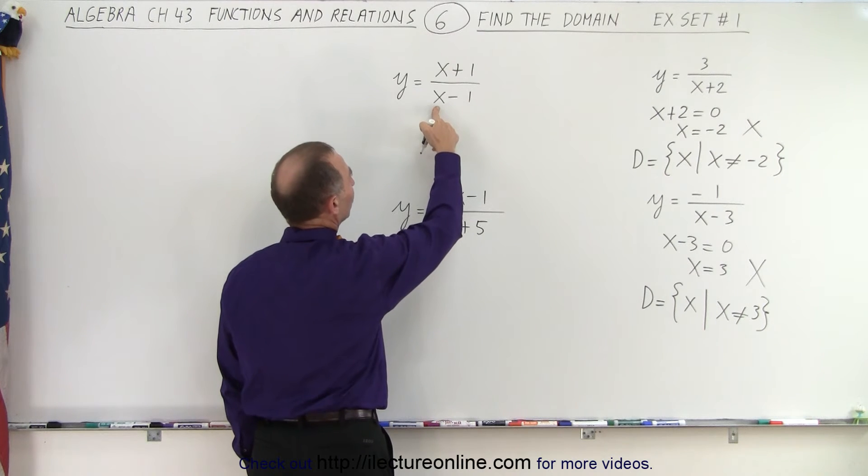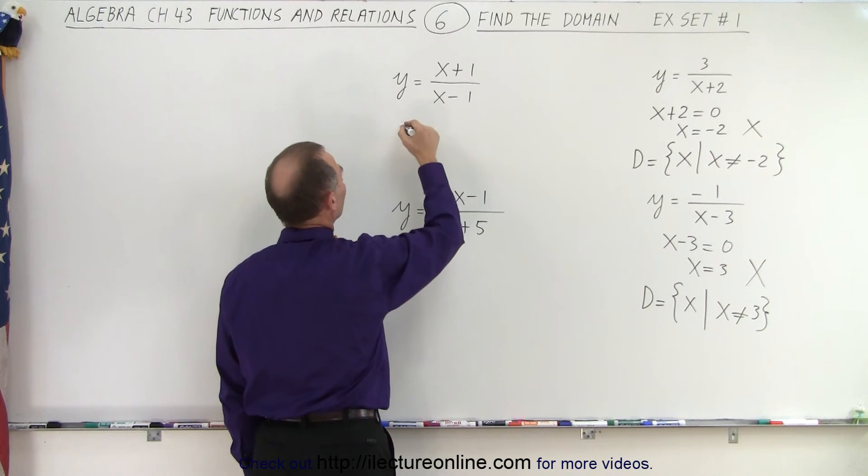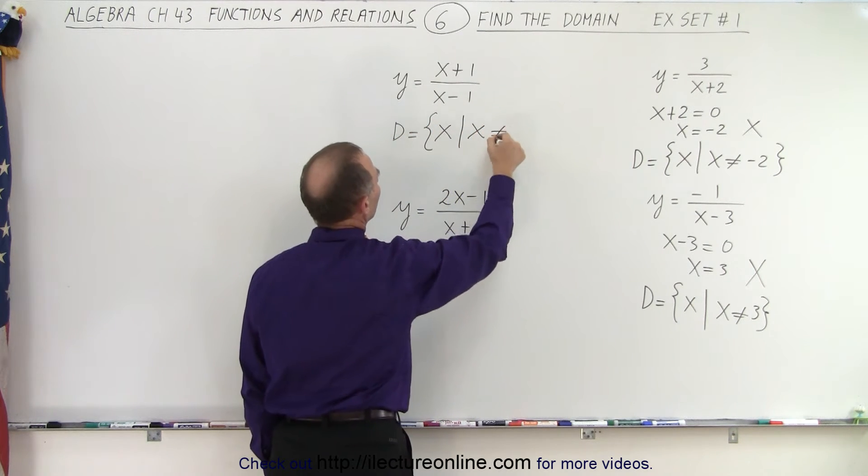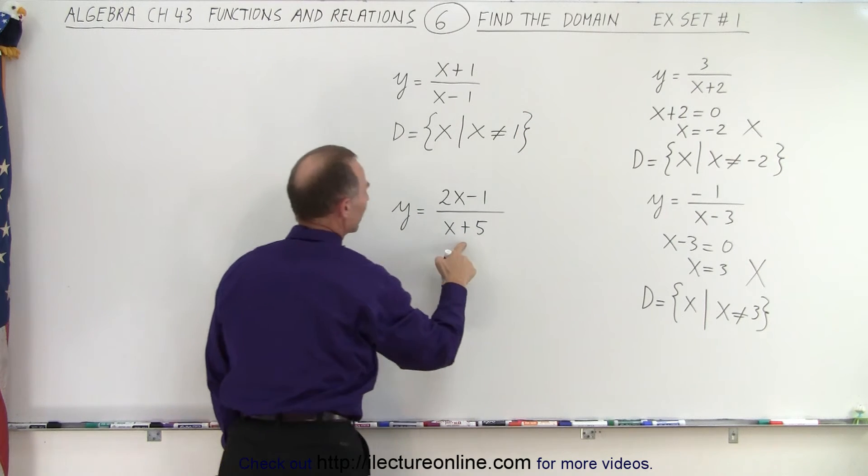So here we see that when x equals one, the denominator is zero. So we see that the domain is equal to the set of all x's such that x is not equal to one.